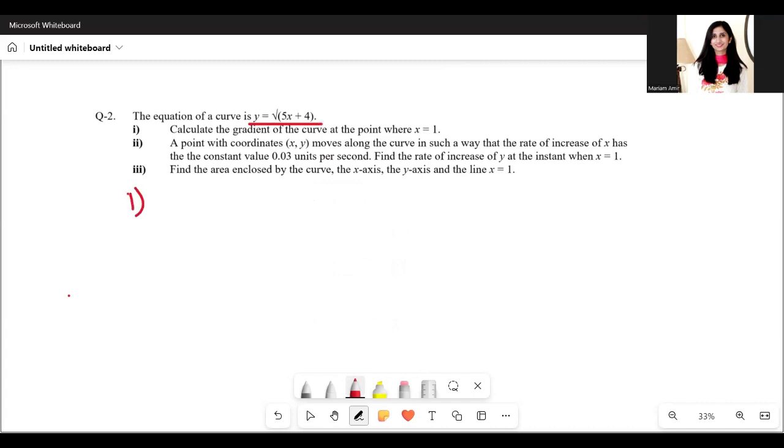This is a question on differentiation. So dy/dx equals, this is (5x + 4)^(1/2). dy/dx would be 1/2 comes down, (5x + 4) power gets reduced by 1. So 1/2 minus 1 which is -1/2, and then we differentiate this 5x + 4 and multiply the result.